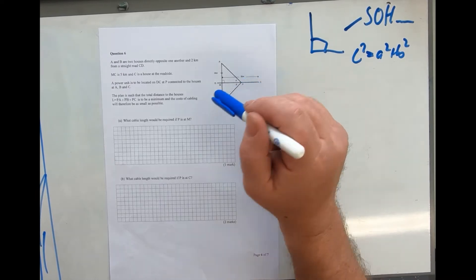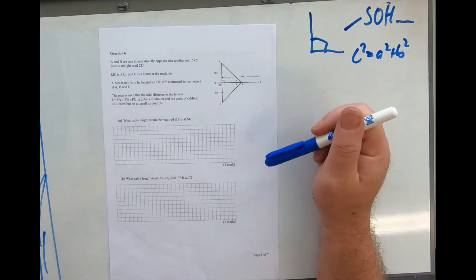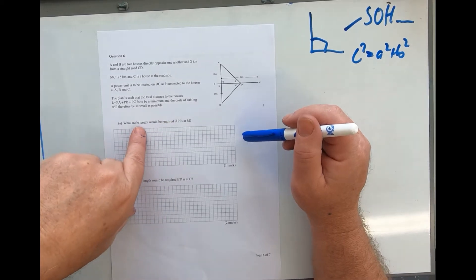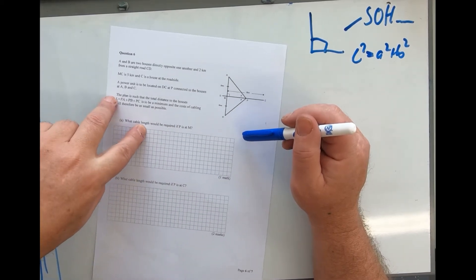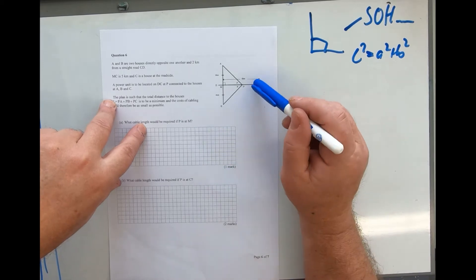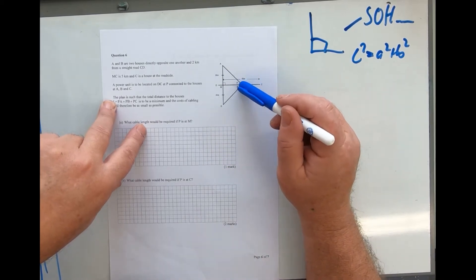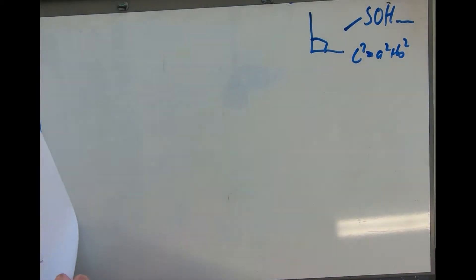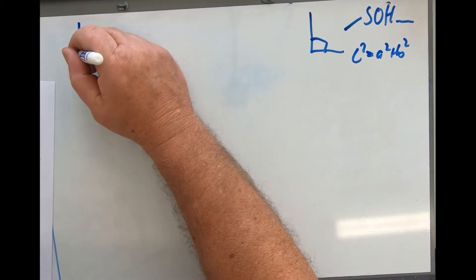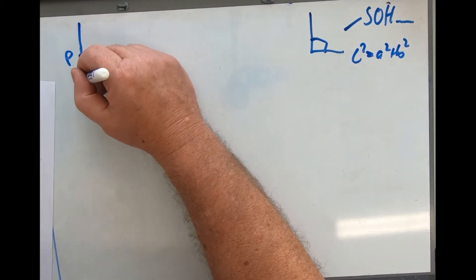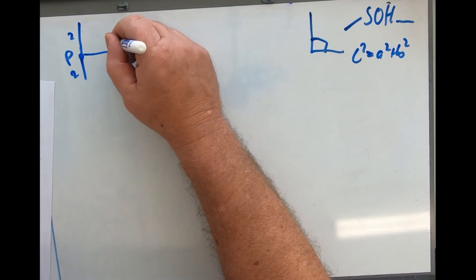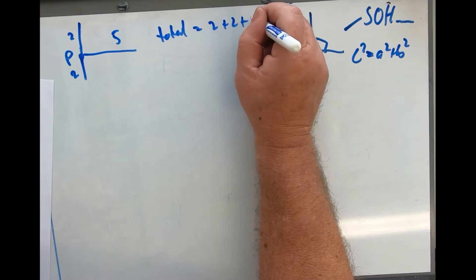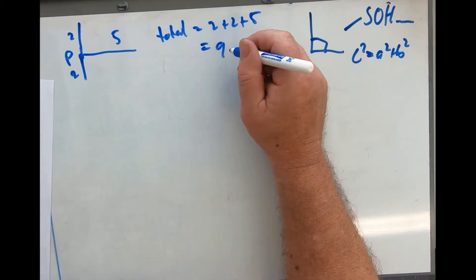First, what's the length if P is at M? If P is at M, that would be 2 for this house, then 2 to the other, and 5 to the third. Total distance equals 2 plus 2 plus 5 equals 9. That's the case if it was at M, which is one of the extremes.